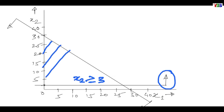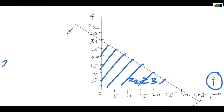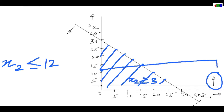From these two constraints, we can observe that the answer will lie somewhere around this region. But we are not done yet, since we have more constraints. The next constraint is x2 less than or equal to 12. Draw the line for x2 less than or equal to 12. The arrow sign represents that x2 is covering values less than 12.